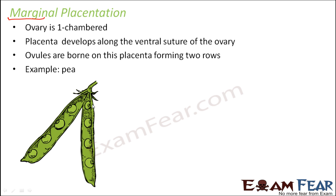Take the example of a pea. The edible parts — the circular structures inside the pea pod — are the ovules. These ovules are connected to the ovary along the margin, with a layer of tissue running along that edge. When the pod is closed the ovules form two rows, one after the other. This is marginal placentation.